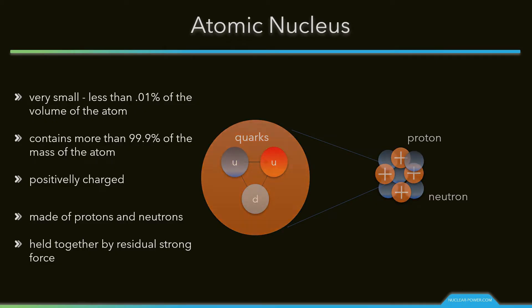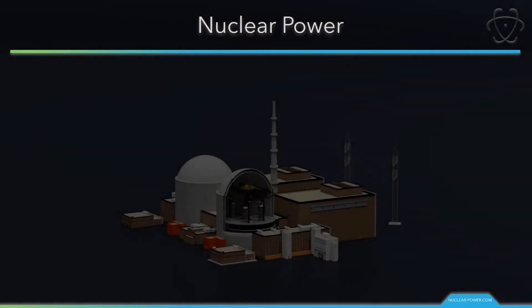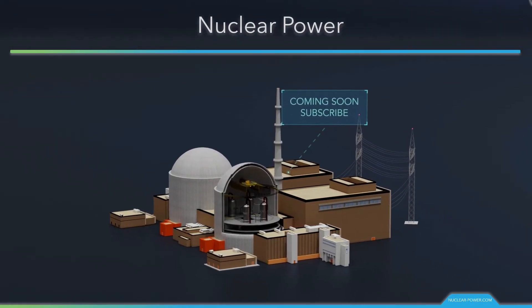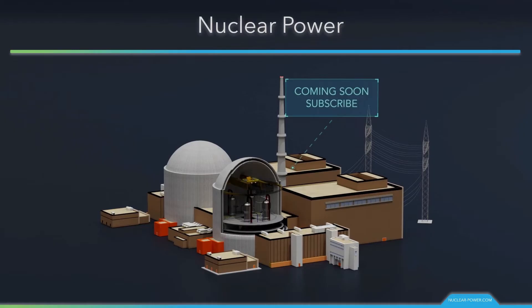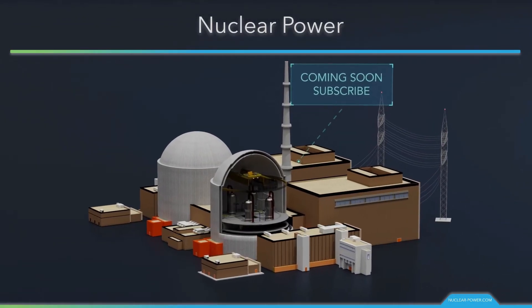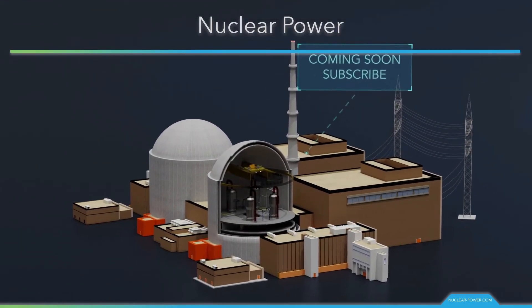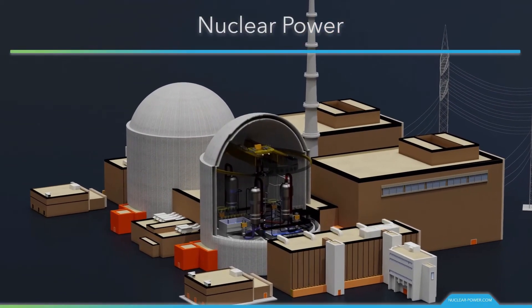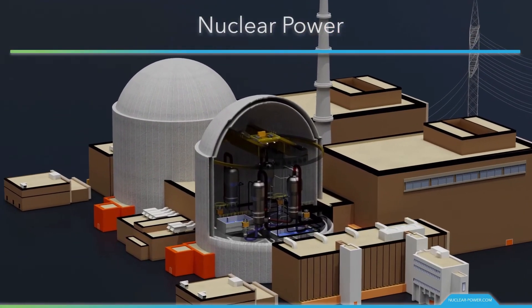The most commonly known application of nuclear physics is nuclear power generation. Nuclear power can be obtained from nuclear fission, nuclear decay, and nuclear fusion reactions. Presently, the vast majority of electricity from nuclear power is produced by nuclear fission of uranium and plutonium in nuclear power plants.